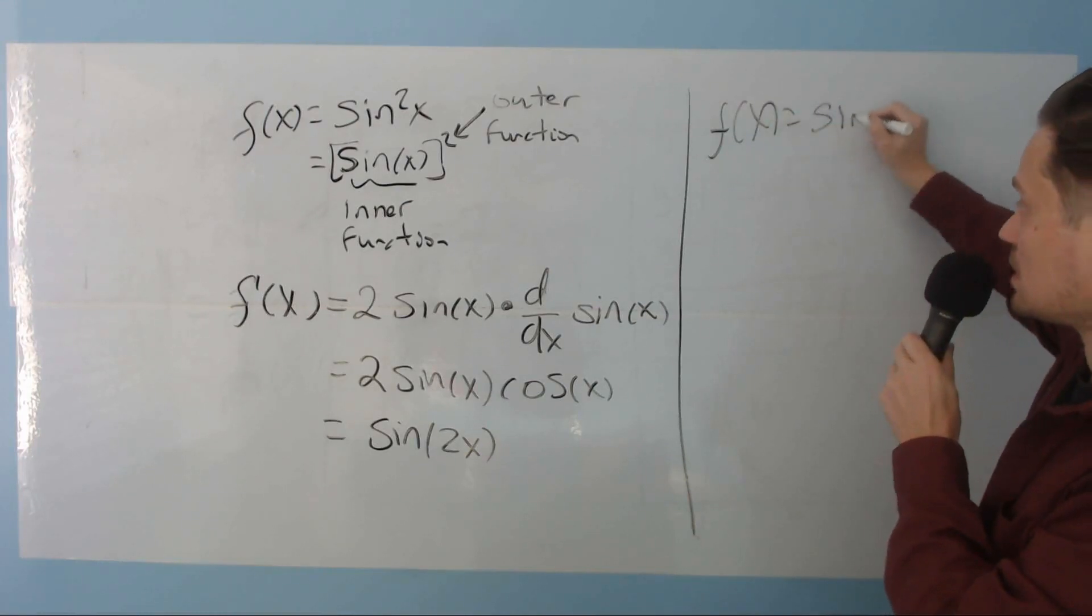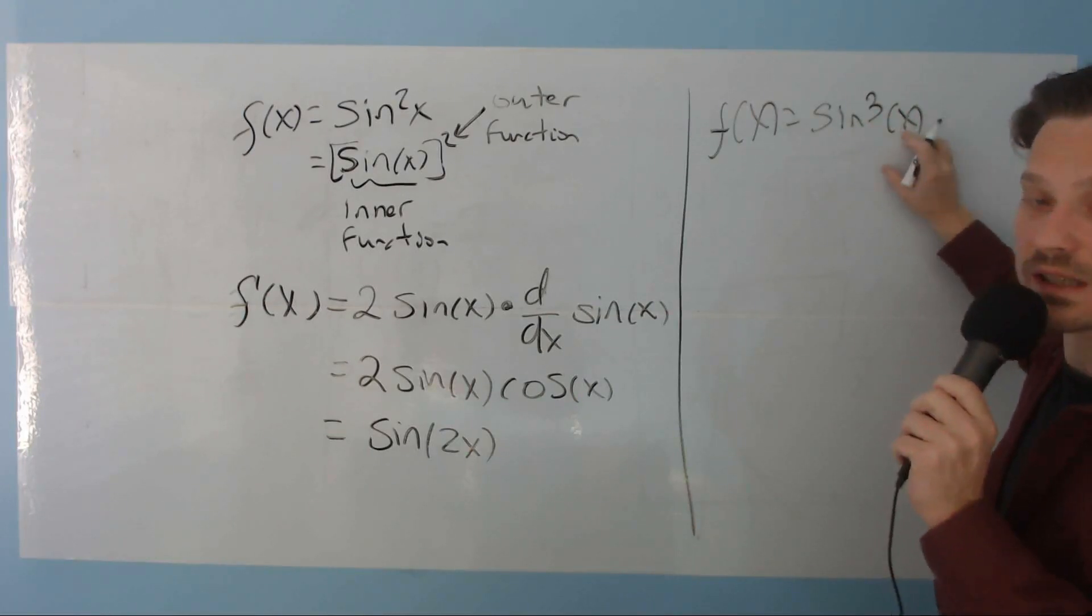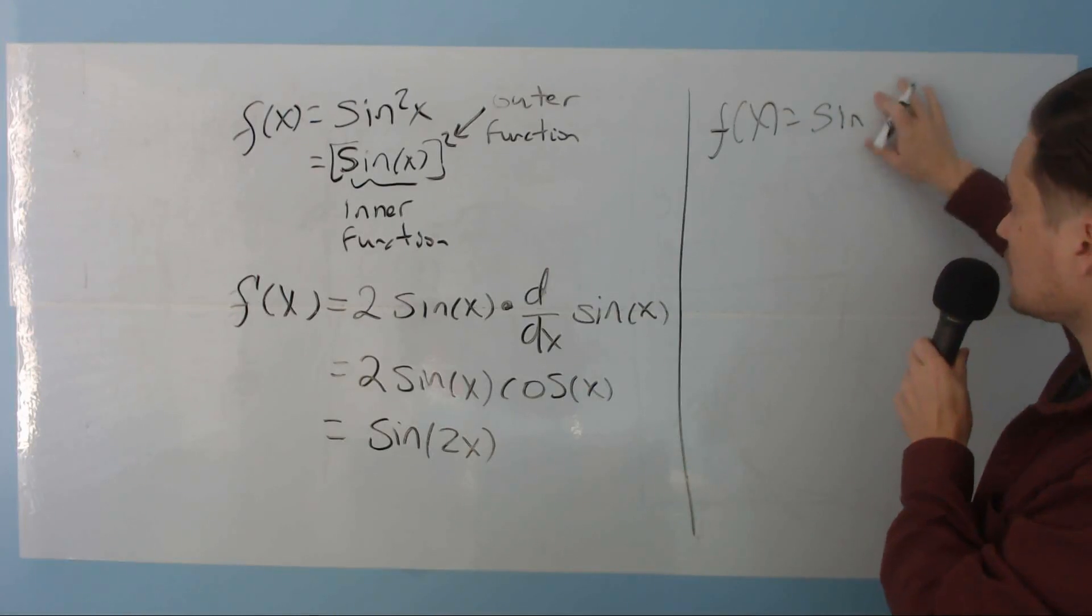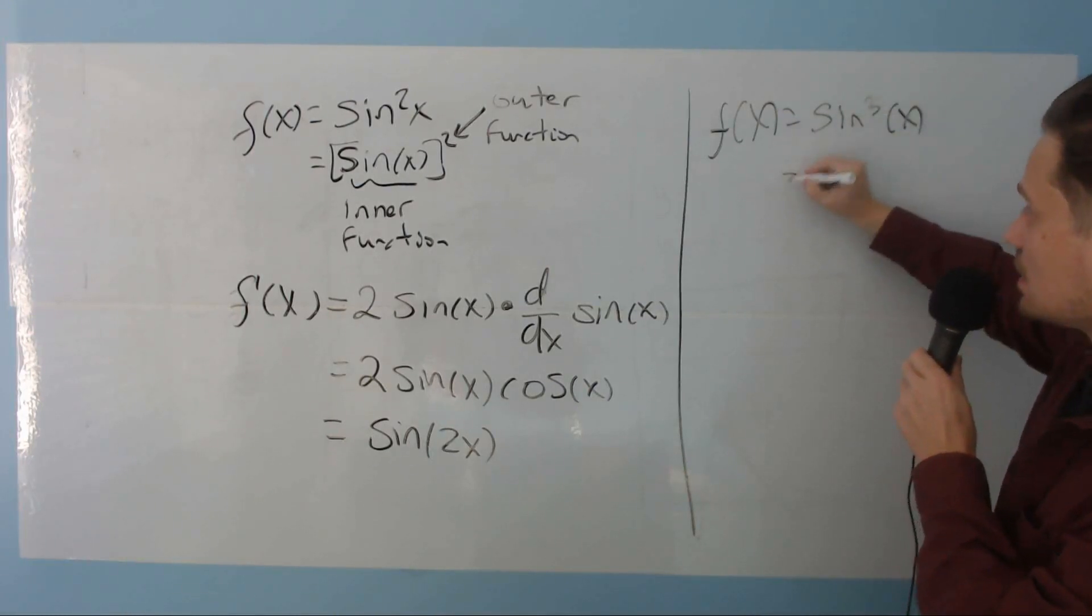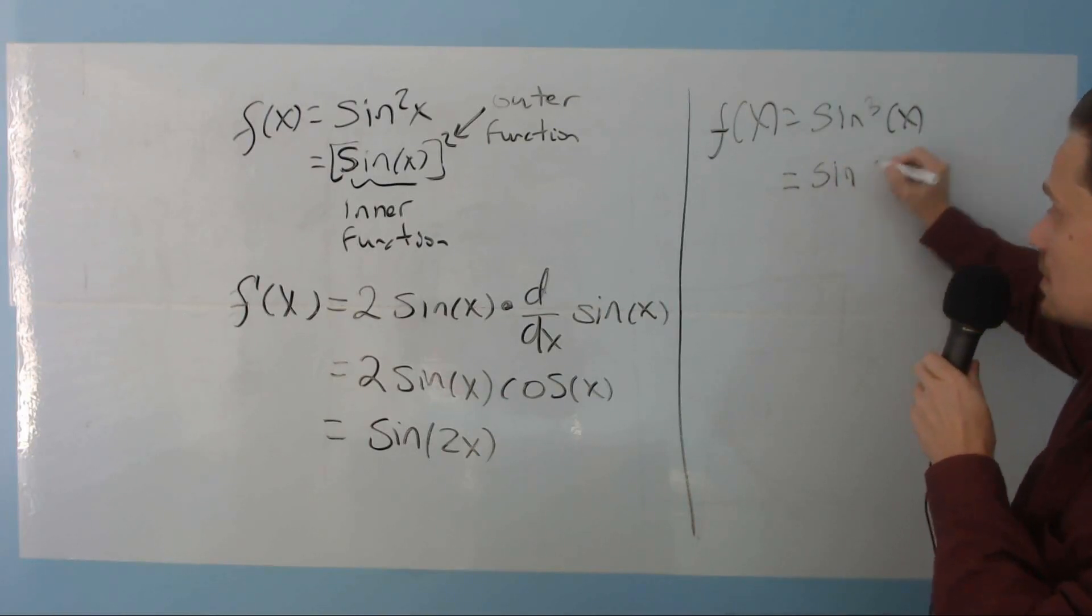f of x equals sine cubed of x. So sine cubed of x. That's meant to be an exponent there, the 3. So the first thing is, usually try to rewrite it so it looks like this instead. Sine of x, and then this whole thing is cubed.